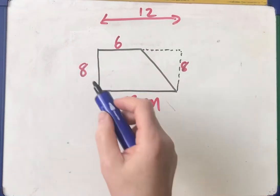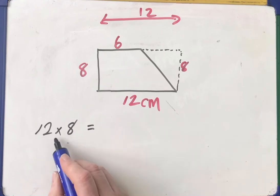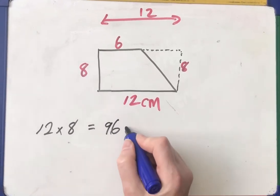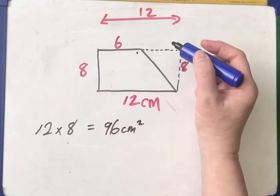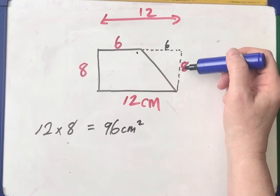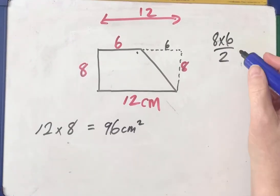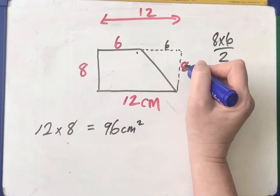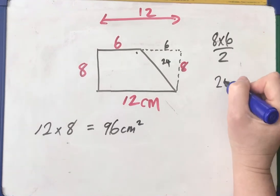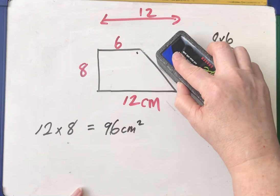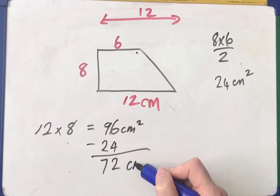The rectangle would be length times width, which would be 12 times 8. 12 times 8 is 80 plus 16, which is 96 centimetres squared. The triangle here — if that whole thing is 12 and that from there to there is 6, so that missing length must also be 6. The triangle area is 6 times 8 is 48, but remember for the triangle, halve it — base times height, 8 times 6 divided by 2. Watch the area of a triangle video if you don't know what I'm doing here. So that one will be 48 divided by 2 is 24. I'm taking that 24 away from the rectangle. So 96 minus 24 is 72 centimetres squared.